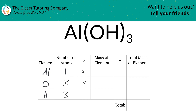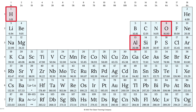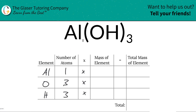We're going to take those number of atoms and multiply by the mass of each particular element using the periodic table. Here's the mass of aluminum, here's the mass of oxygen, and here's the mass of hydrogen. Those values can be in grams per mole if you're finding molar mass, or amu if you're finding molecular mass.